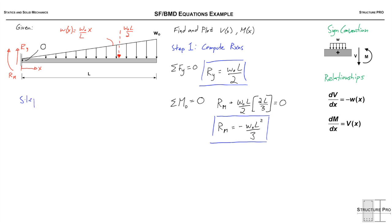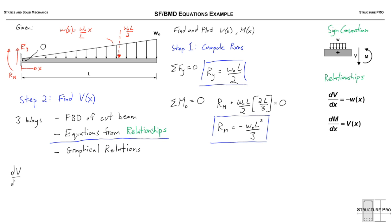Okay, so we can move on to step 2 now. And step 2 is just going to be to find V(x), the shear force as a function of x. We really have three strategies or ways to do this. The first is to draw a free body diagram of a cut beam and actually just sum the forces and figure it out that way. The second, which we're asked to do, is to use the equations from these relationships that we derived. Those are shown on the right. And the final one is what I'll call the graphical relations. That's using these relationships as well, but not actually using any equations or formulas. So we're going to do step 2, because that's what this example is on.